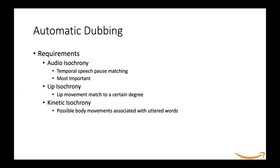For a faithful automated dubbing, there are several requirements, three of which are most important. Number one is audio isochrony, which is temporal speech-pause matching between the source and the target sentence, and this is the most important isochrony. The other types are lip isochrony — where lip movements should match to a certain degree — and kinetic isochrony, where possible body movements associated with different uttered words should be matched.